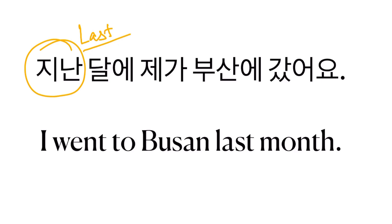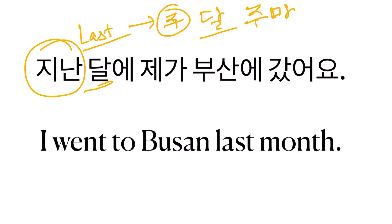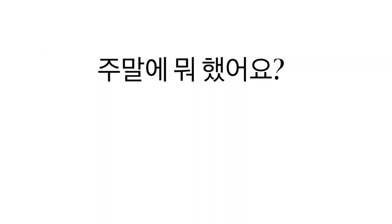The word chinan means 'last' when you are talking about time. Generally we use it with chinandare chumal — chuo is week. Chinandare dal means last month. For year, we say changnyon — changnyon means last year. We don't say chinanyon. So chinandare chega busane khasayo — I went to Busan last month.